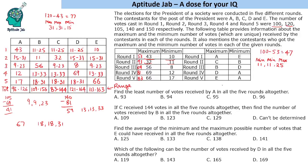The first question asks: find the least number of votes received by A in all five rounds together. The least is 96. We can find the minimum and maximum, but we cannot determine exact intermediate values since those depend on the other contestants as well.